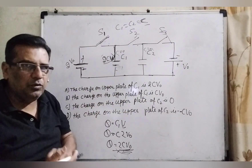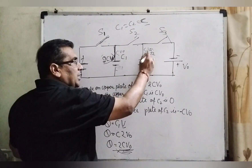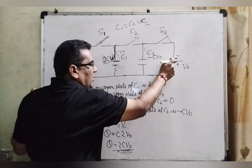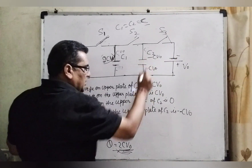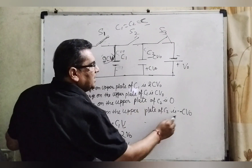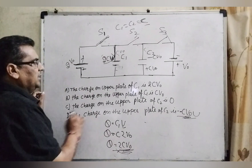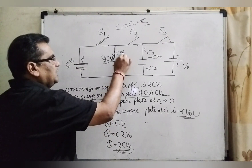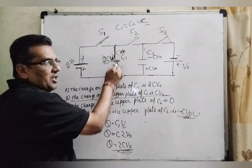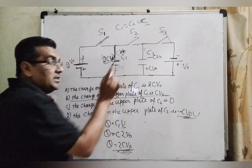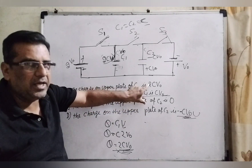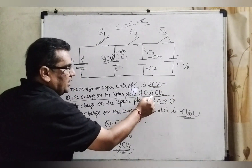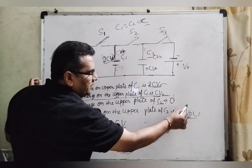So the charge on the upper plate of C2 is 0 initially, but after continuing the connection, this plate becomes minus CV0 because this terminal is negative and this terminal is positive. Finally, minus CV0 is the stable state for C2. The charge on the upper plate of C1 is CV0, which is constant and stable. The 2CV0 and 0 states are unstable — only C1 equals CV0 and C2 equals minus CV0 are the stable charges.